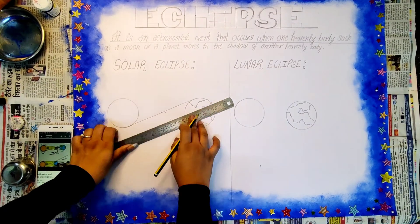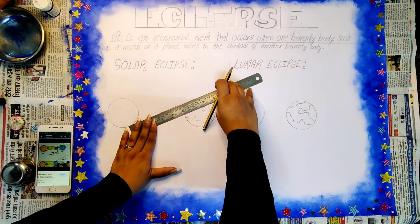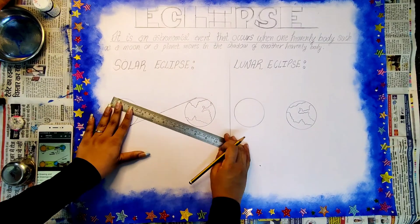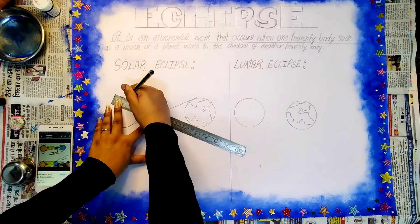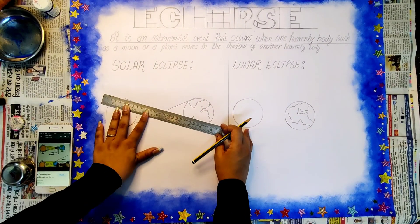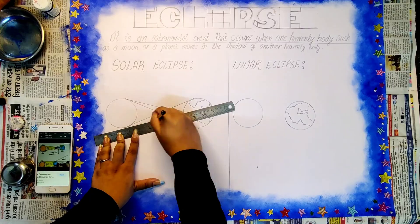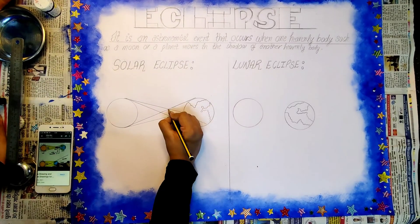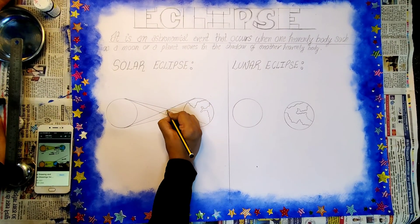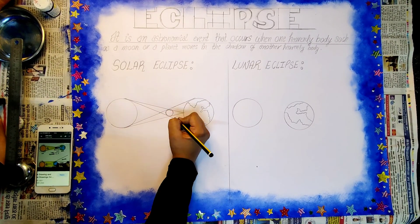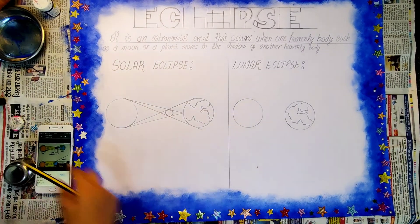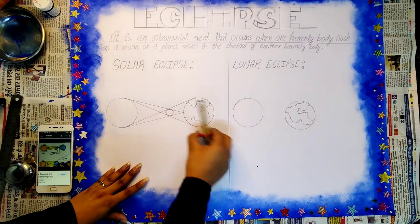Now we'll be drawing four lines from the sun to the earth, crossing each other. Between these lines we'll be drawing a small circle that is the moon of the solar eclipse.